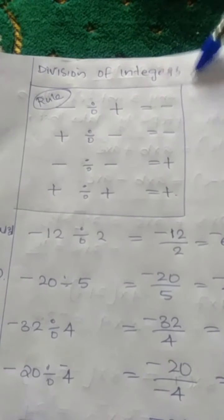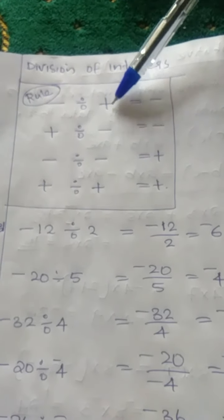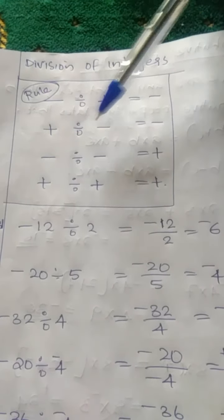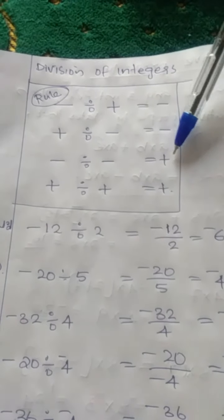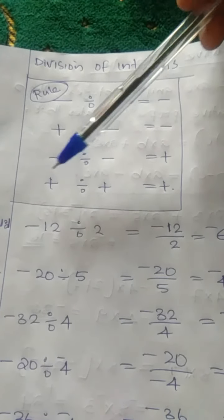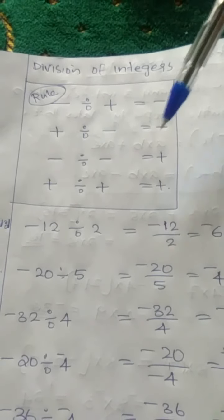Now we are discussing division of integers. Before that, we must understand some rules. If we divide a negative number by a positive number, the answer is negative. If we divide a positive number by a negative number, the answer is negative. If we divide a negative number by another negative number, the answer is positive. And if we divide a positive number by a positive number, the answer is positive. This is the same as multiplication rules.